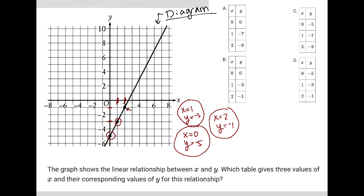For choice A, the first ordered pair says when x equals 0, y should equal 0. But we already know that's not the case — when x equals 0, y should equal negative 5. So choice A is gone. Choice B also says 0, 0, so that's gone as well.